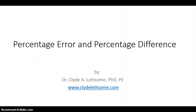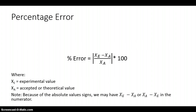Let's start with percentage error. The equation for percentage error is equal to the magnitude of x_e minus x_a, divided by x_a, times 100 — where x_e is the experimental value and x_a is the accepted or theoretical value. The order in the numerator doesn't matter because the absolute value signs give us the magnitude regardless.